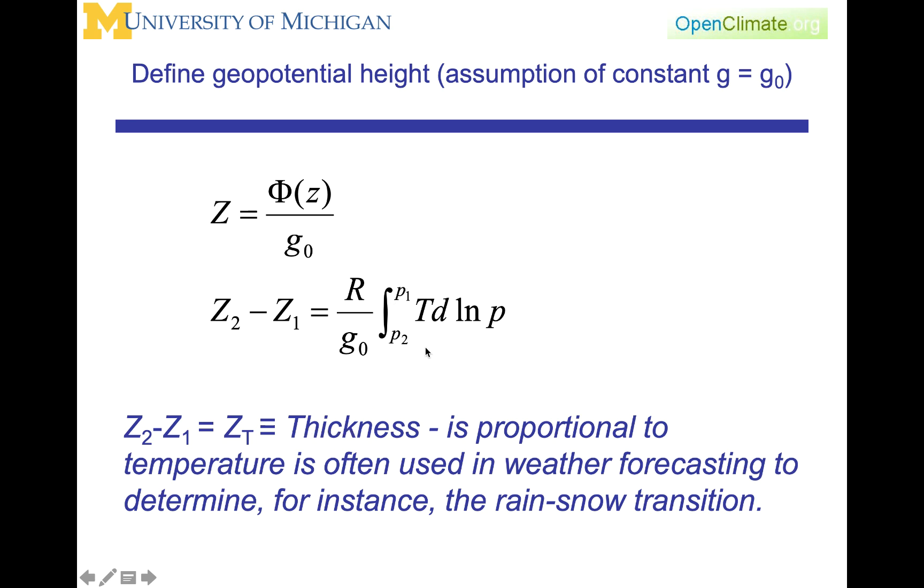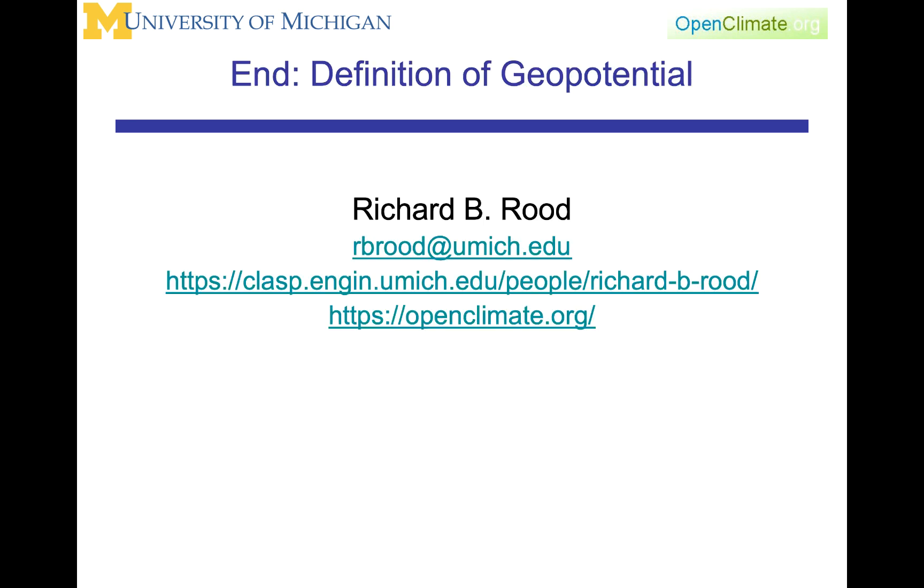If you were to use a mean value for T, such that you could do this integral easily, you will see that the thickness is proportional to the average temperature of a layer between two pressure surfaces. Again, this is thickness, it's proportional to temperature, and for those of you interested in weather forecasting or doing analyses of what the temperature is and perhaps the state of water, this is a very useful rule of thumb for determining whether you're at a rain-snow transition, for example.